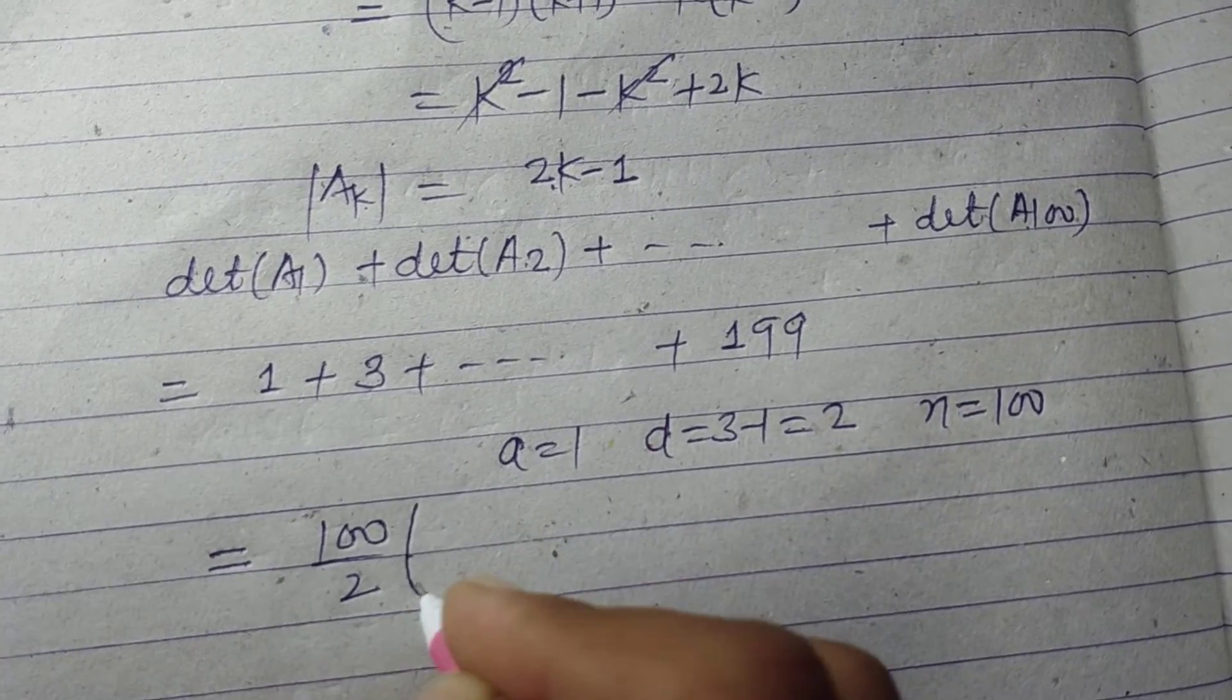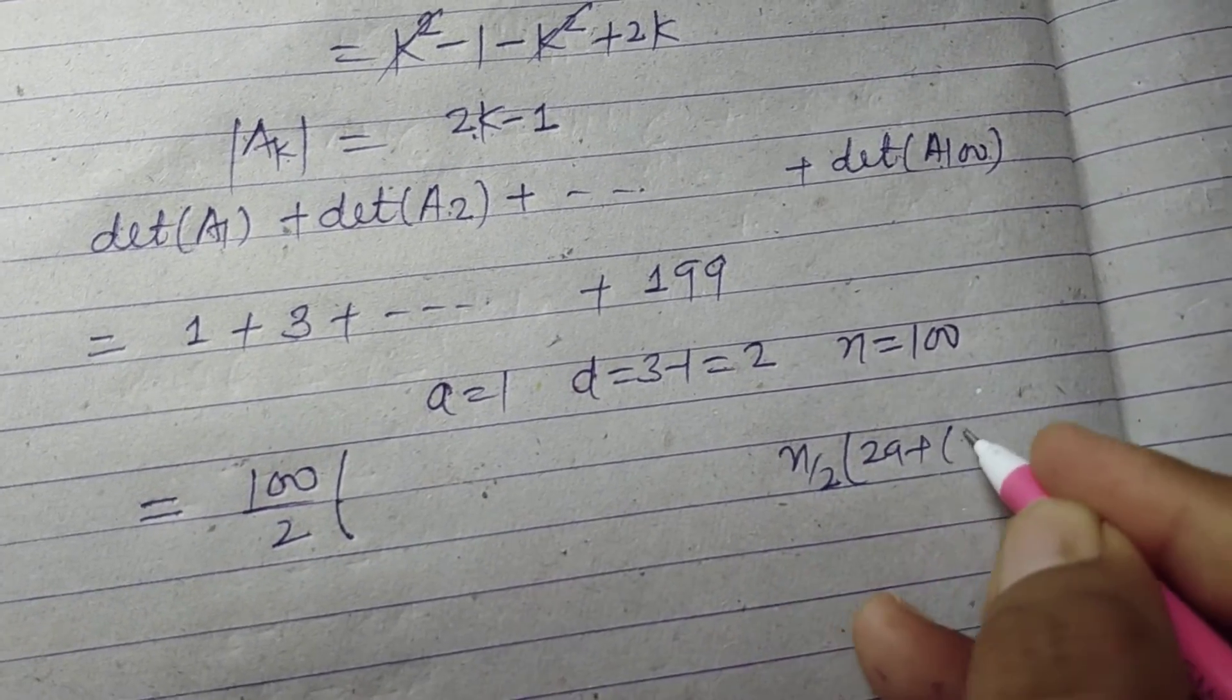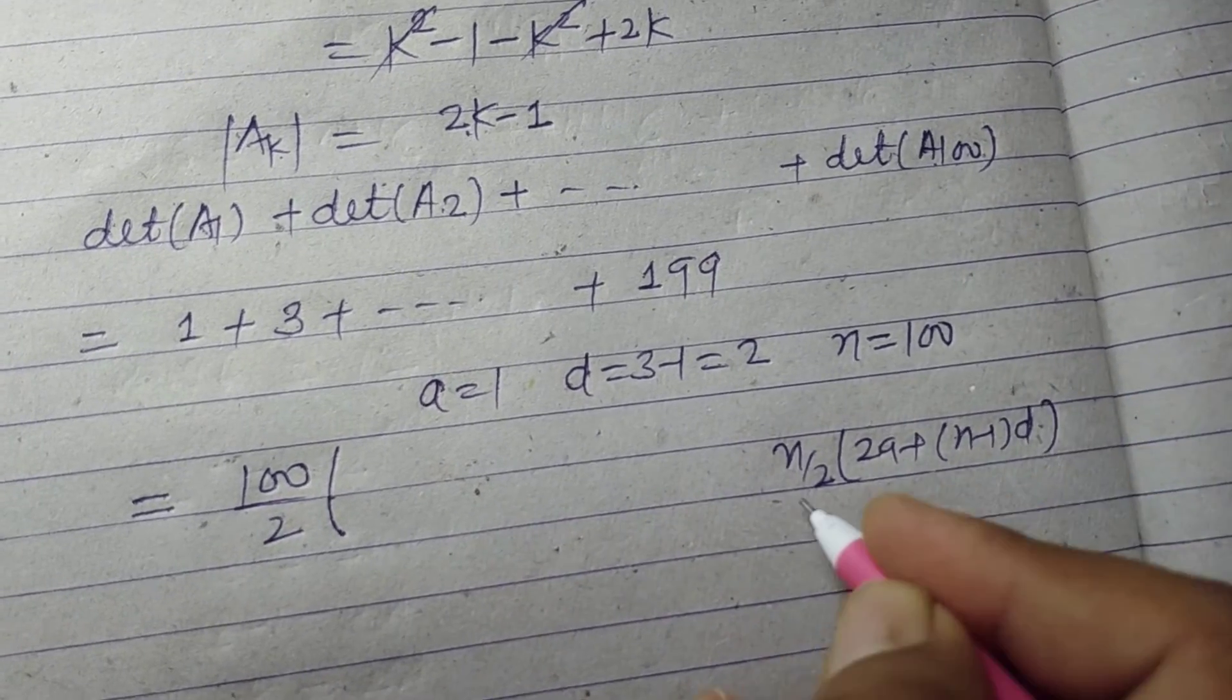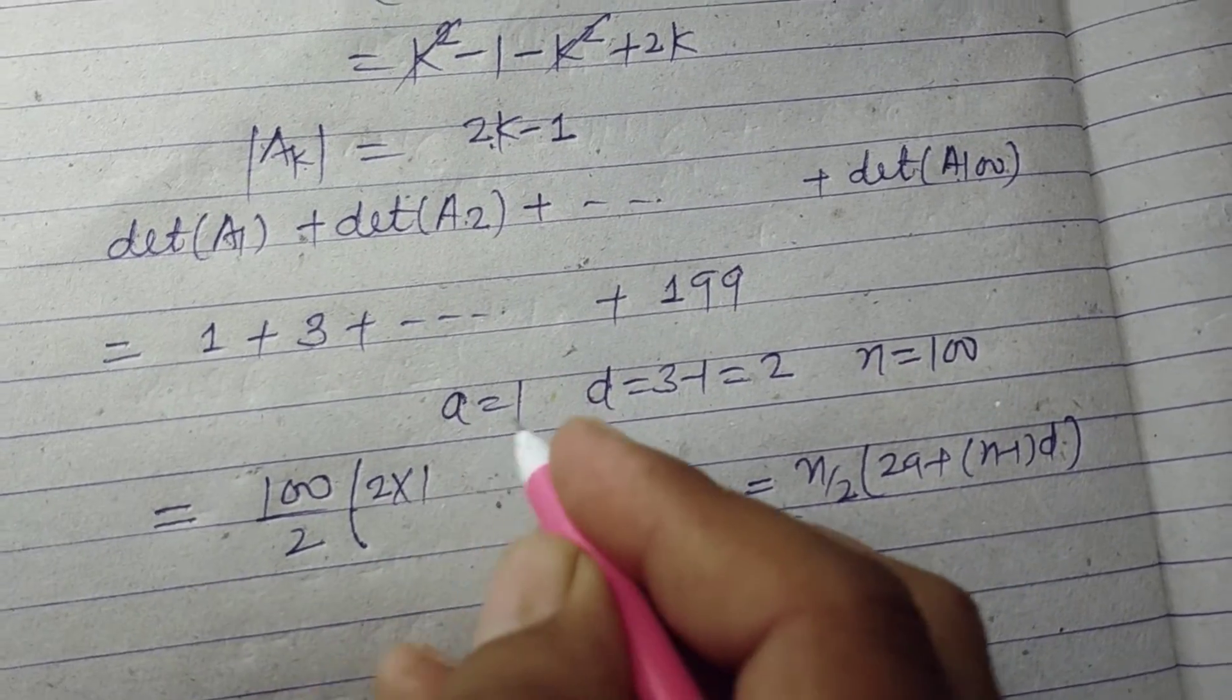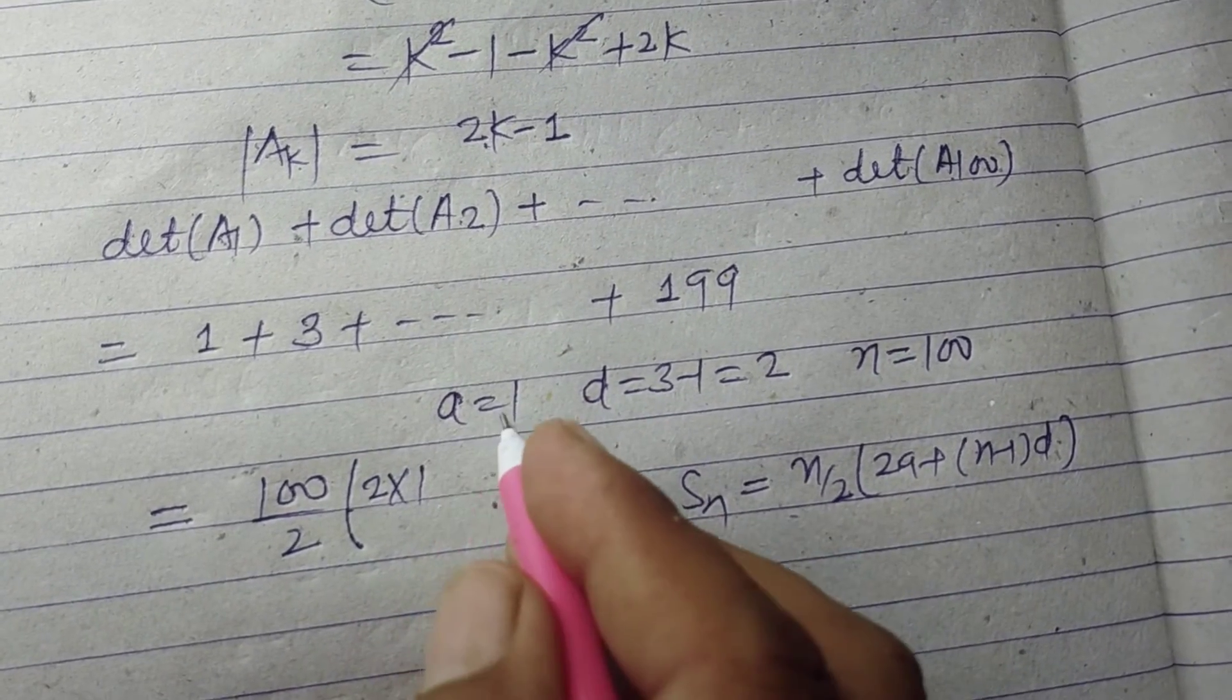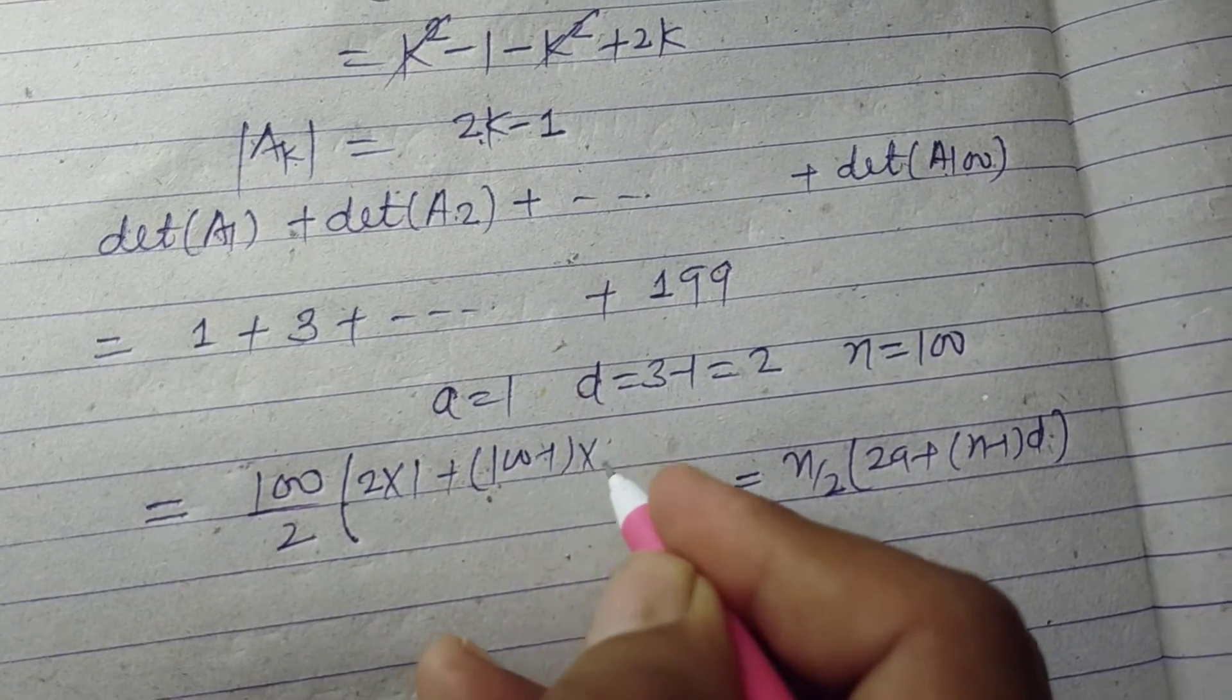So sum of 100 terms is n/2 using the formula 2a + (n-1)d. That's 100/2 times [2(1) + (100-1)(2)]. The first term is 1 and d is 2.